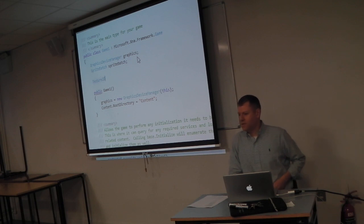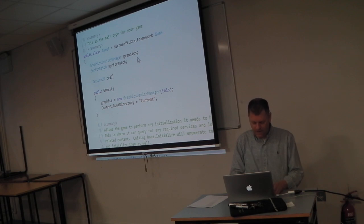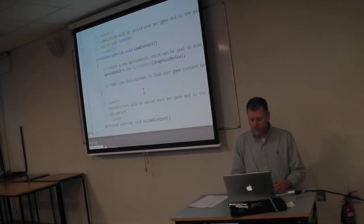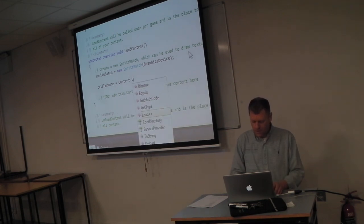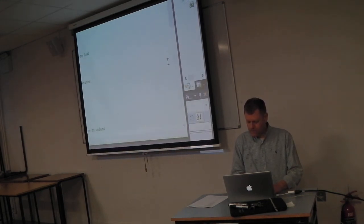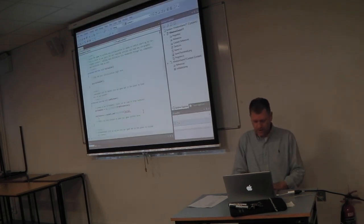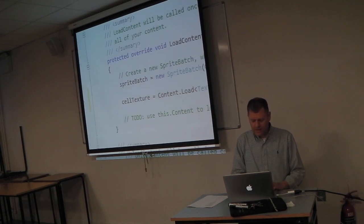I get paid massively — you have no idea how much the Institute of Technology pays me to answer your questions, so make use of me. I'm going to declare a Texture2D and call it cellTexture. We remember from the first semester to load a texture in XNA — you put it in the LoadContent method: cellTexture equals content.Load<Texture2D> and pass in the name 'white dot'. You don't put the BMP extension. That's the cell texture loaded.